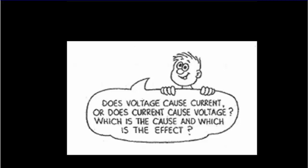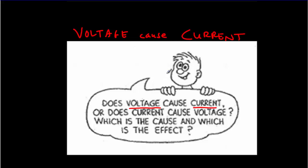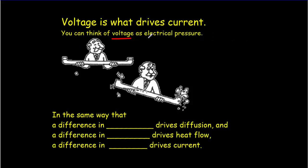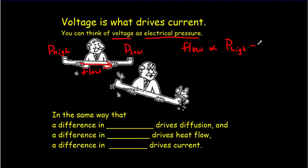You probably remember a little bit about voltage and current. A very important question: does voltage cause current, or does current cause voltage? Hopefully you said that voltage causes current — something called voltage makes the charge move. Voltage is often called electrical pressure. If I have a water pipe with high pressure on one side and low pressure on the other, I'll get a flow of water proportional to the difference in pressure, P-high minus P-low.